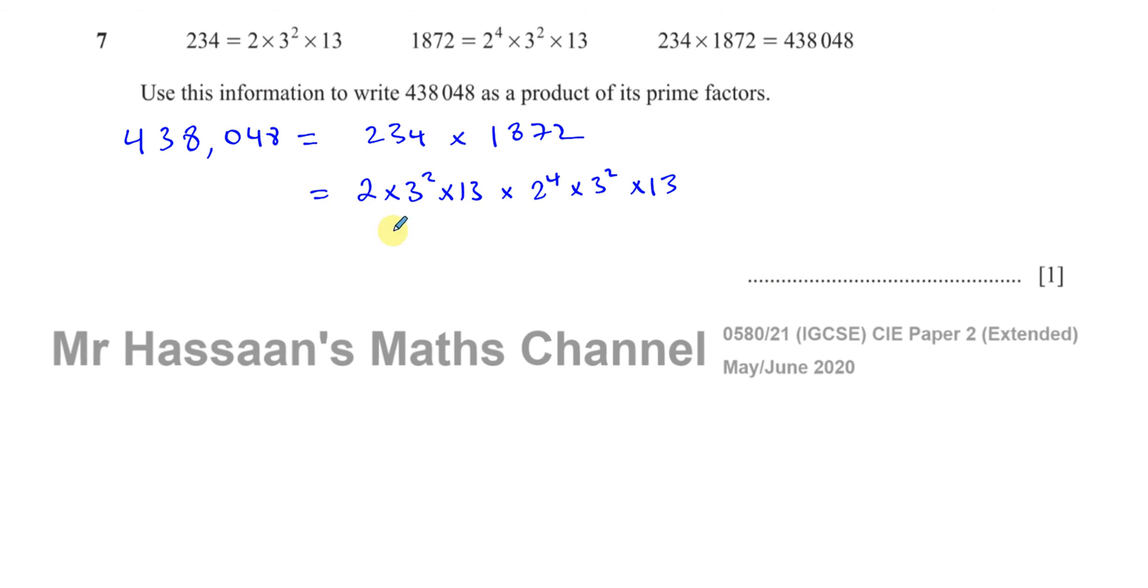What we need to do is combine the like bases. This is 2 to the power of 1. If I multiply that by 2 to the power of 4, I add the powers, so 2 to the power of 1 plus 4. When you multiply two numbers with the same base, you add the powers. Then you've got 3 to the power of 2, times 3 to the power of 2, which is 3 to the power of 2 plus 2.